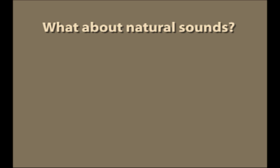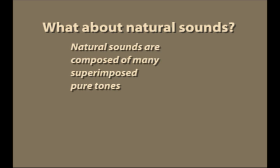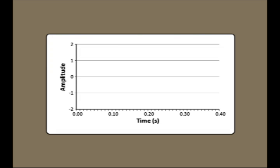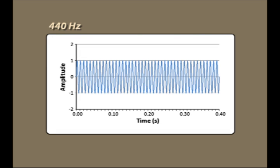Natural sounds are more complex than pure tones, of course. But even the most complex sound can be broken down into a series of pure tones. This is made possible by the principle of superposition. Let's graph out two sine waves. One has a frequency of 440 Hz, A above middle C, and this is what it sounds like.